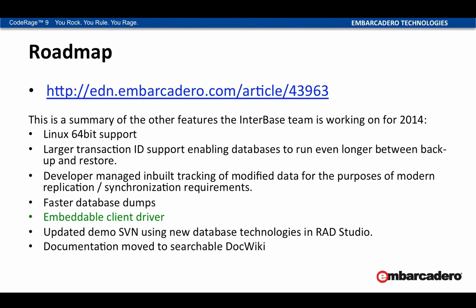The Interbase Roadmap is available publicly on EDN at Article 43963. We are looking at both 32- and 64-bit support for Linux to join the 32- and 64-bit support we already have for Windows servers. We're also looking at large transaction ID support — this means databases can run for even longer between backup and restores. With 64-bit transaction IDs, you're looking at hundreds of years before needing to worry about running out of transaction IDs, making it ideal for very high transaction load workspaces.